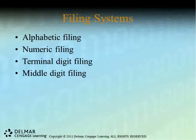Names with prefixes like Mac or Mc may be filed the same depending on your facility's policies and procedures. Whether to file with professional or religious titles also depends on the facility. If two patients have identical names, you may file according to date of birth — oldest first — and if that is also identical, by address. When doing your alphabetic filing assignment for this class, follow the rules in the textbook.